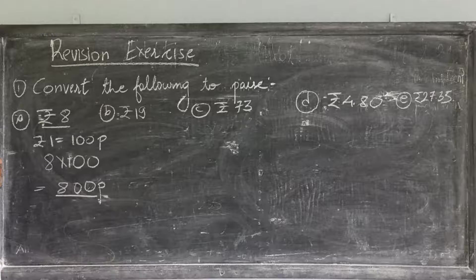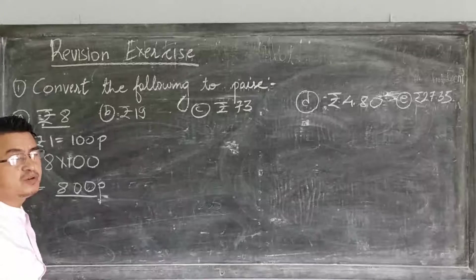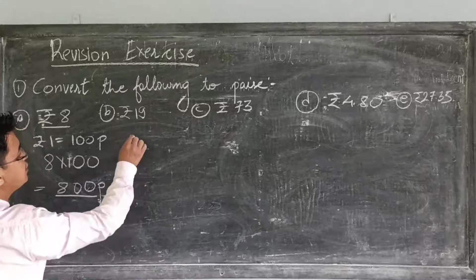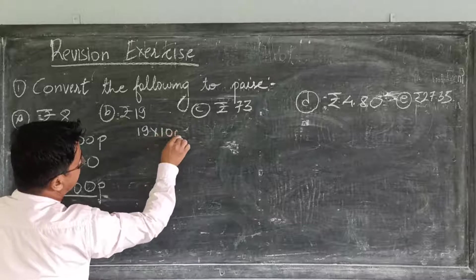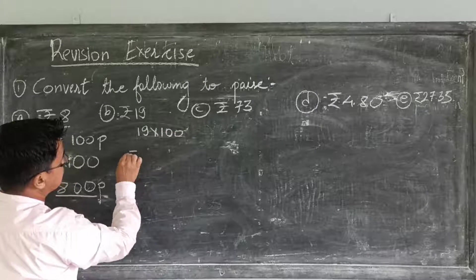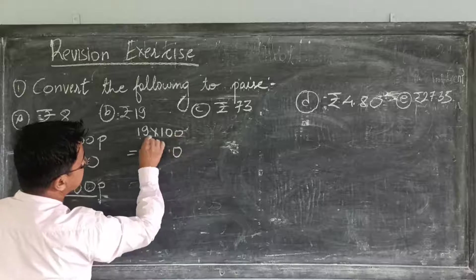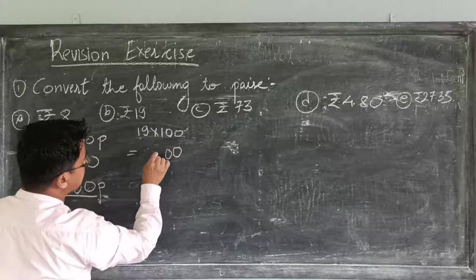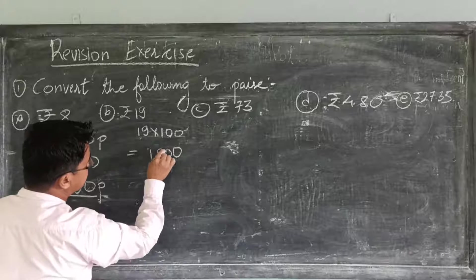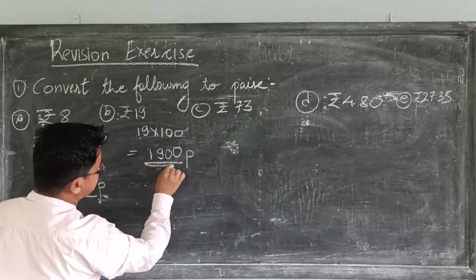Now, B. Rupees 19. We know that 1 rupee is equal to 100 paise. So 19 rupees is equal to 19 into 100, which is equal to 1900 paise.